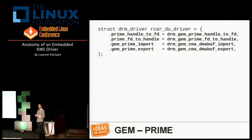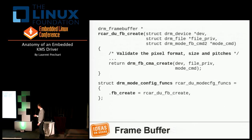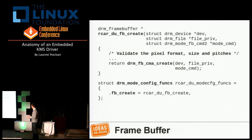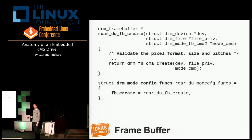In summary: allocation of buffers, mapping them to userspace, freeing them, and exporting them are all handled by the helpers — nothing to do for memory management. For frame buffer creation, the fb_create function needs to be implemented in your driver. When userspace requests a frame buffer with parameters like size and pitch, you validate those parameters — if userspace asks for a YUV frame buffer and your hardware can only do RGB, return an error. When done validating, call drm_fb_cma_create, a helper that creates the frame buffer with GEM CMA objects behind the scenes.